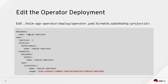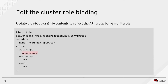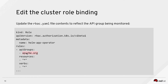Next, editing the cluster role binding — we update the rbac.yaml file. The only thing that changes in this file is the API group in the first declaration. We change the API groups placeholder from the default HTML tag placeholder to apache.org, matching our vendor name.